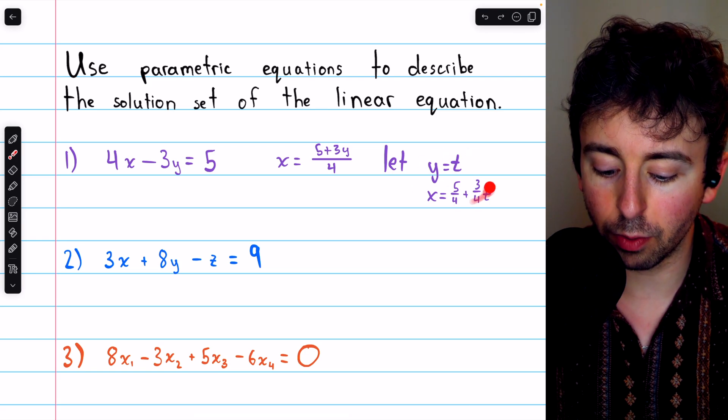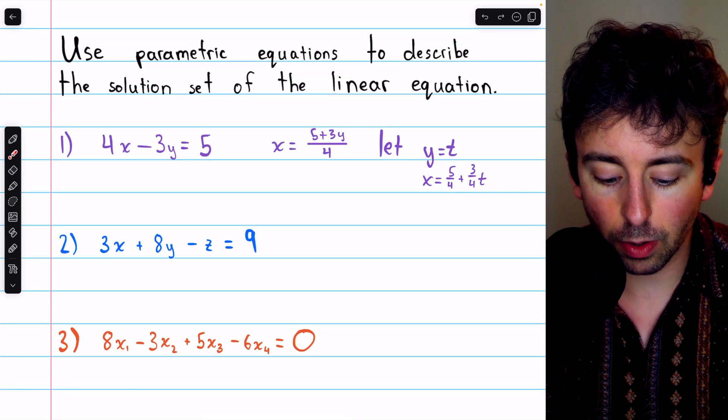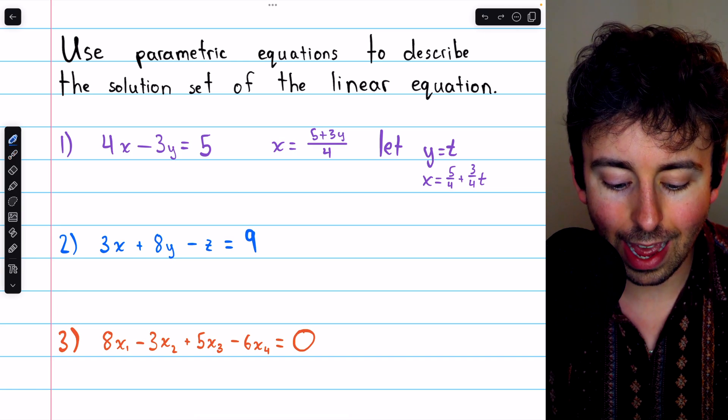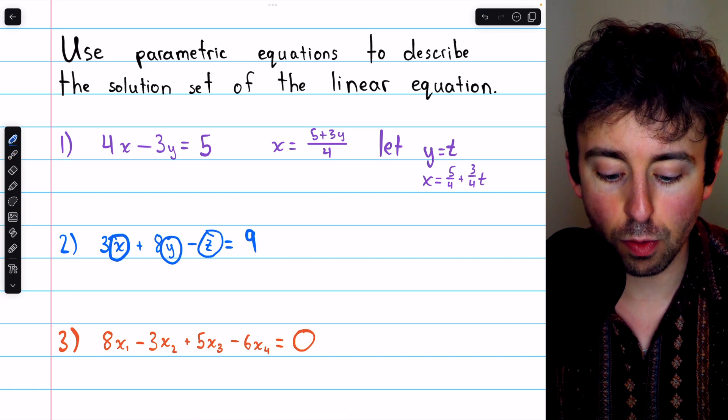Any xy pair of this form will be a solution to this linear equation. We'll do a similar thing in this second example. Although, in this case, we have the one equation, but we have three variables. So in this case, we'll actually have two parameters.